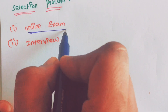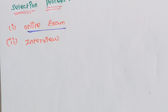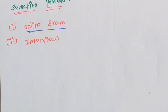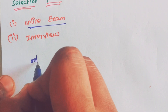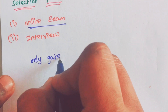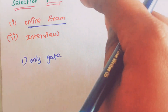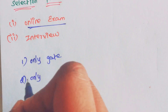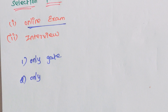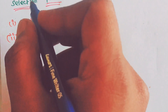When applying for BARC exams, you can apply in three ways. The first option is via GATE exam scores. The second option is the online exam only. The third option is both — you can attempt both the GATE route and the online exam.